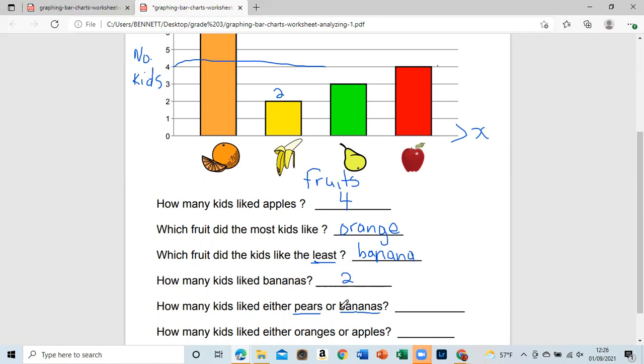So pears and bananas. This will be pear. So three plus two, so five persons like either pear or bananas.